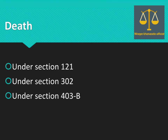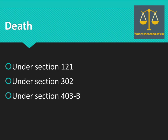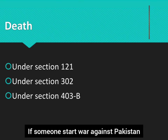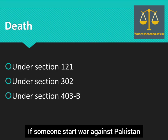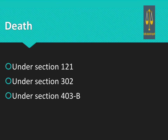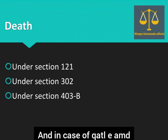Death is a capital punishment that may be awarded for certain offenses under Pakistan Penal Code. There are three crimes for which death is given: first, waging war against Pakistan or facilitating it; second, in cases of hijacking; and third, if Qatl-e-Amd (intentional murder) has been committed.